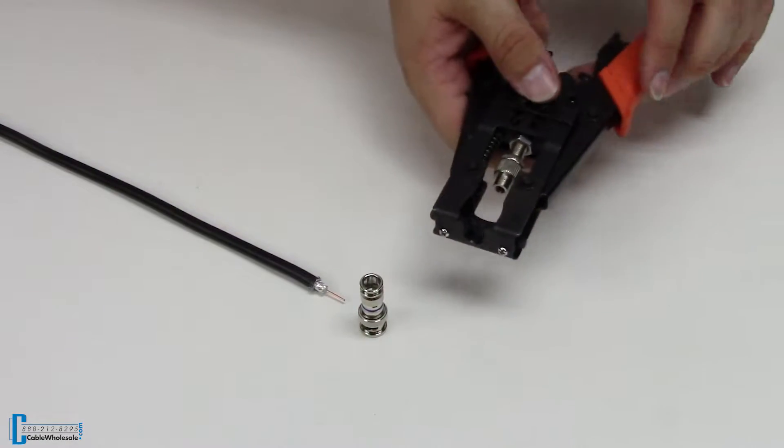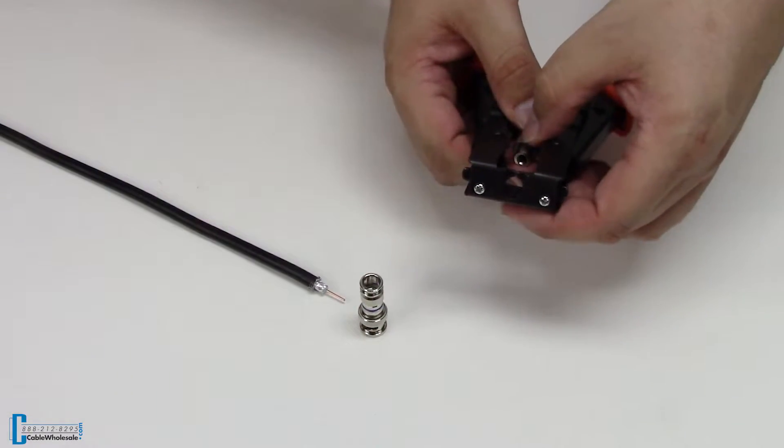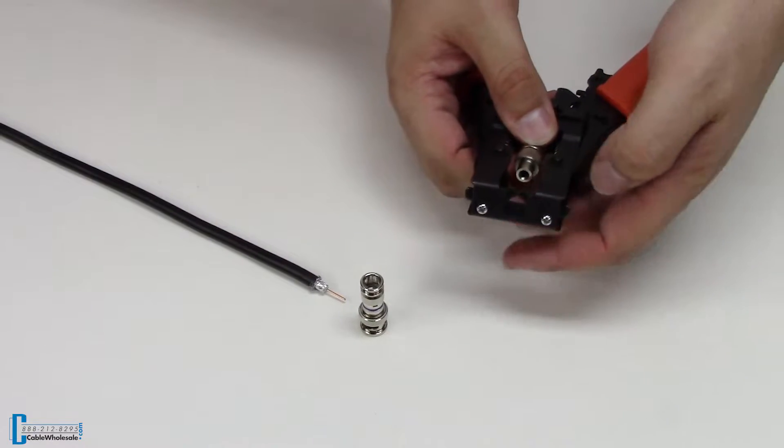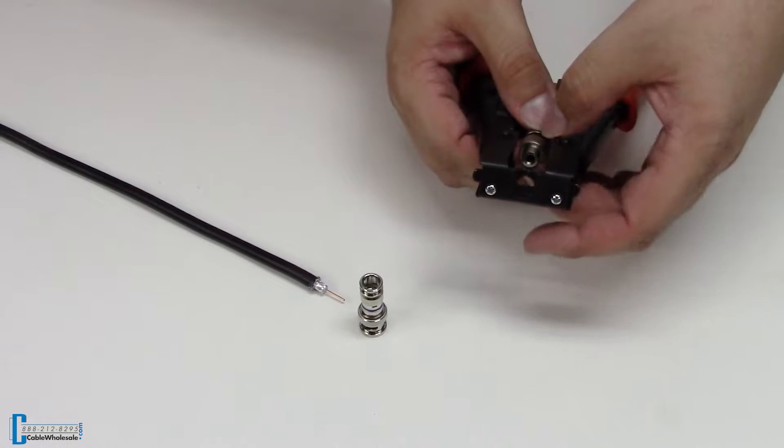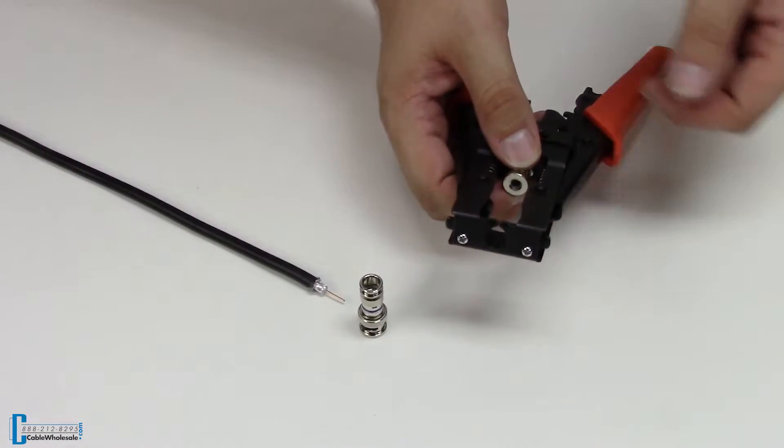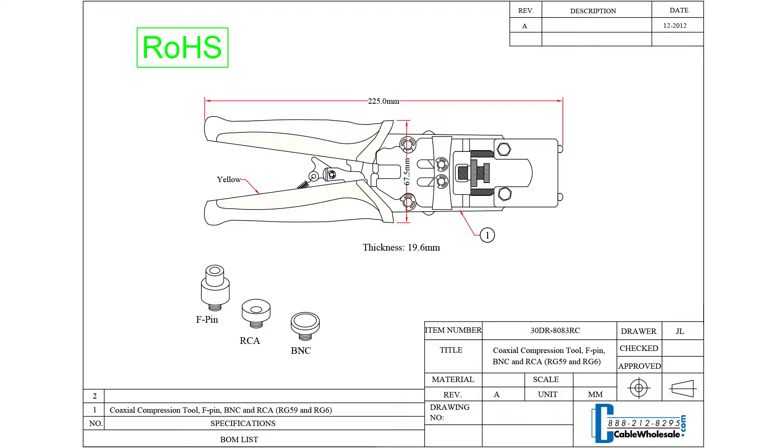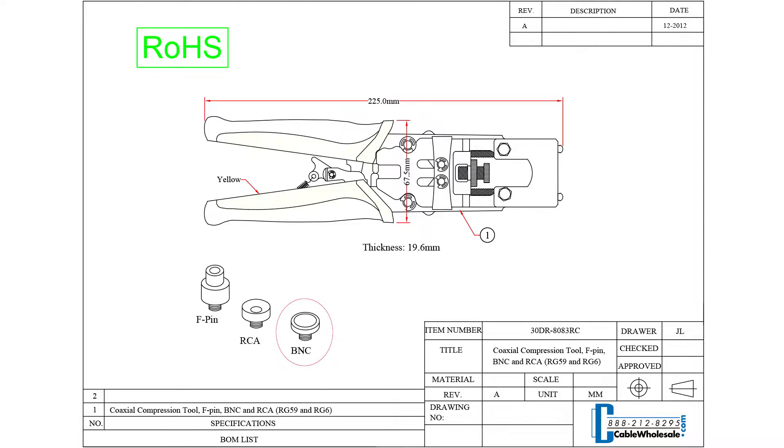We'll get this tool set up. In our last video, which you can see right here, we were doing an F-pin coaxial compression. We're going to take the F-pin die out just like that and put on the BNC die. You'll need to have the correct die for the application to work.